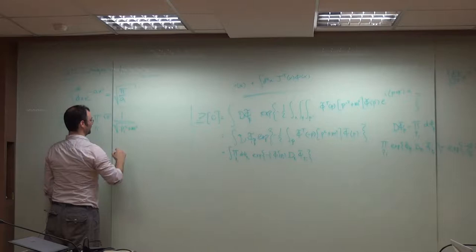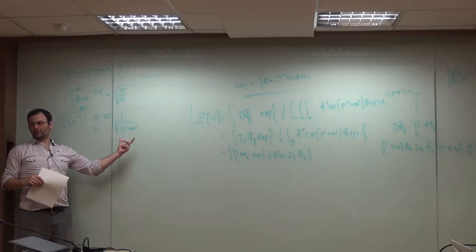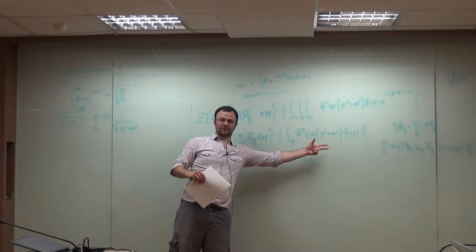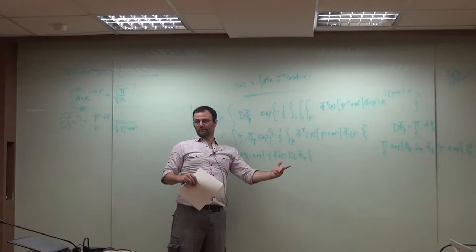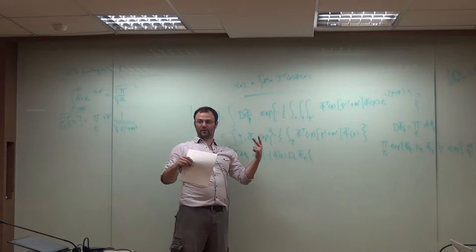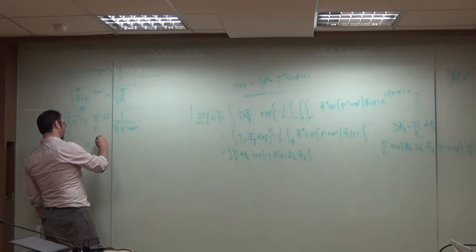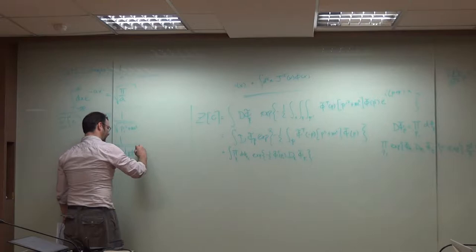So what is this? This is the product of all the eigenvalues of the operator d, because this is the operator in momentum space. The operator in momentum space is diagonal, so we're just taking the product of all the diagonal elements. The product of the eigenvalues if the operator is diagonal is the determinant. So this is, up to some normalization, one over the square root of the determinant of our operator d.